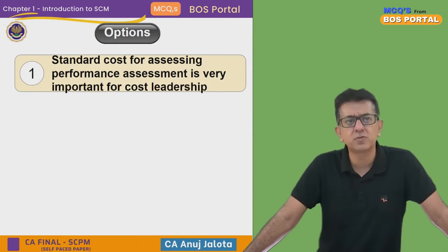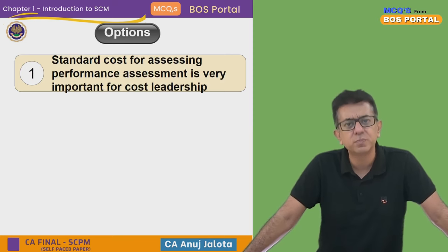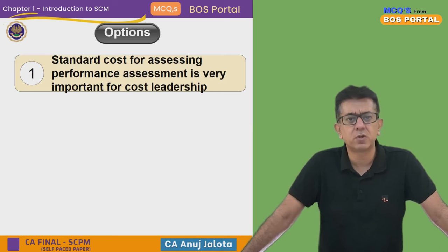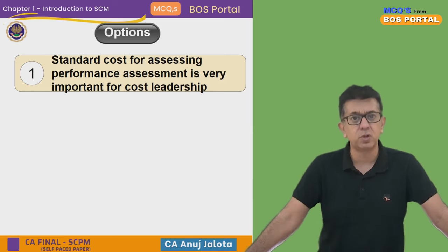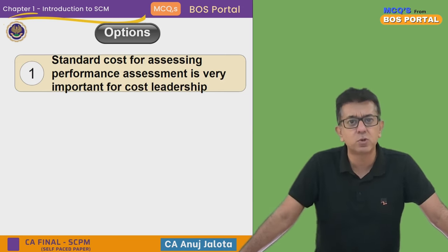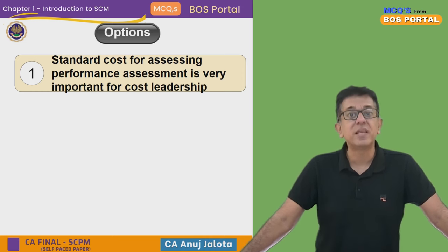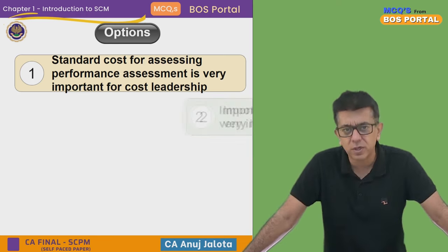The first option: standard cost for assessing performance is very important for cost leadership. If you follow standard costing, its basic objective is to control cost — which is also our aim for cost leadership. So standard cost assessment is very important to know whether we are controlling the cost or not. First option is correct.